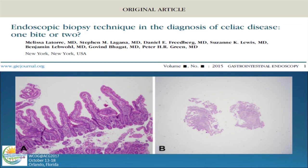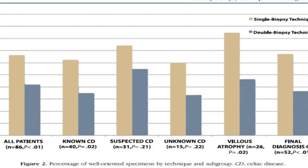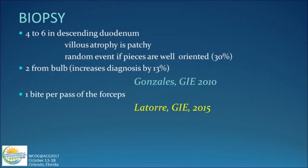Orientation of biopsies came from the old days when Crosby capsules were used. We were interested whether a single-bite technique had a better yield than a two-bite technique. In all different settings, taking one bite per pass of the forceps had a higher yield for the presence of well-oriented villus-to-crypt units. Currently it's recommended four to six pieces, biopsies from the bulb, and one bite per pass of the forceps.